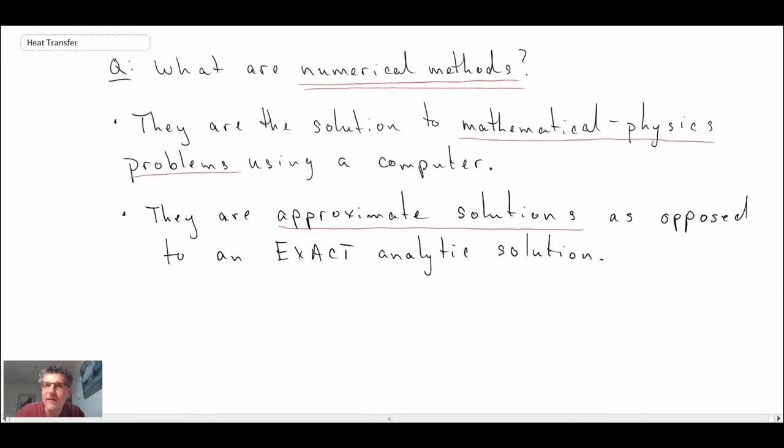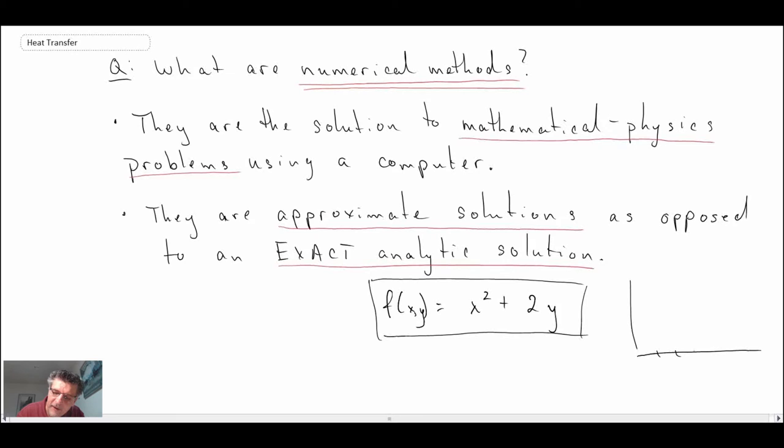This is opposed or different than if you are able to come up with an exact analytic solution. So that might be something like f(x,y) = x² + 2y. With an analytic solution, you come up with an exact analytic relationship. With a numerical method, you have things on a grid at discrete points, and so you're just coming up with a solution at those discrete points. And that's where you know your answer.